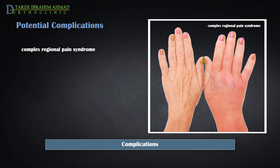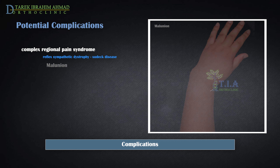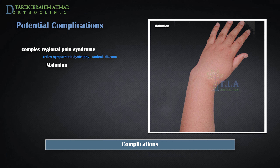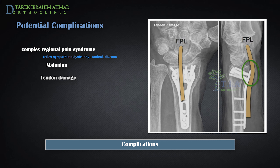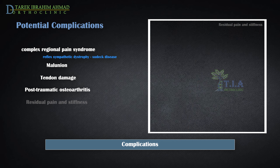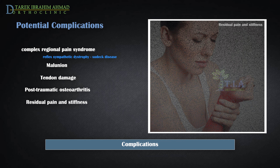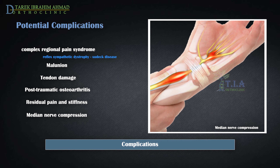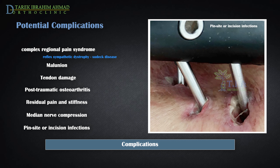Potential complications include: unrelenting pain, which may be a sign of complex regional pain syndrome (reflex sympathetic dystrophy) that must be treated aggressively with medication or nerve blocks; malunion of the bone and continued deformity, which can be treated with corrective osteotomy; tendon damage from an internal plate, which may require a second surgery; post-traumatic arthritis in the wrist, particularly with intra-articular fractures; residual pain and stiffness; median nerve compression, more common in patients who heal with significant malunion; and pin site or incision infections.